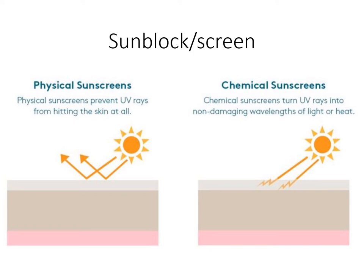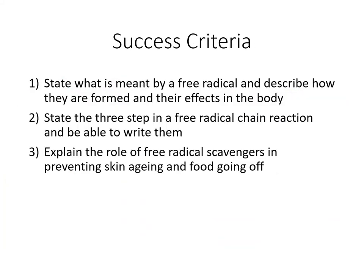There are two methods for how sunscreens work. Physical sunscreen is just like a block - it stops anything getting through. Chemical sunscreen has chemicals that absorb or change those UV rays into safer forms of light. That's a brief overview of how sunscreens and sunblock work. The second part is all to do with free radicals and free radical reactions.